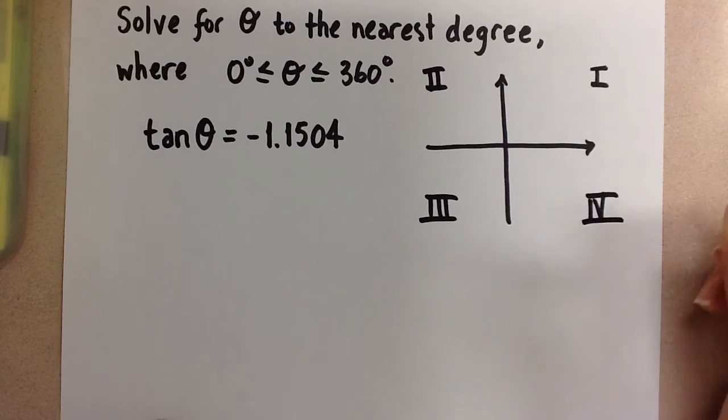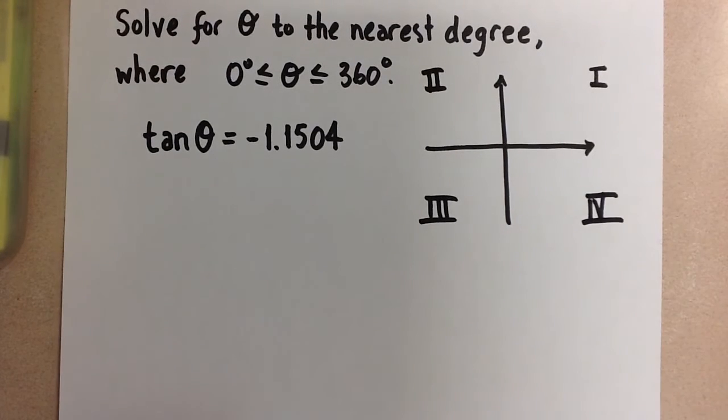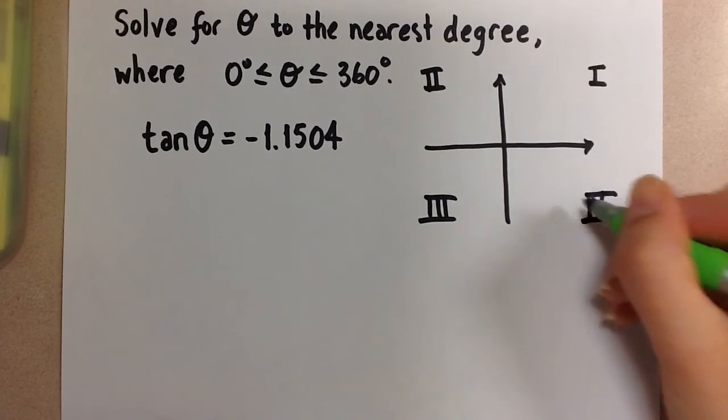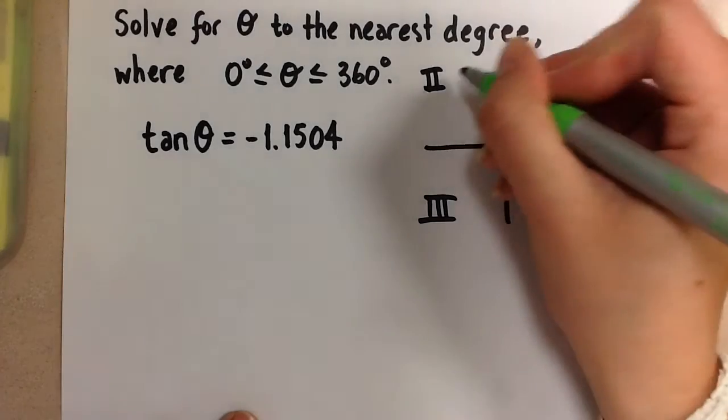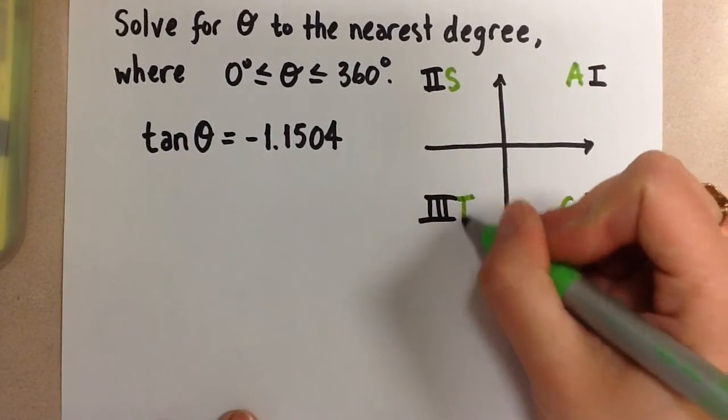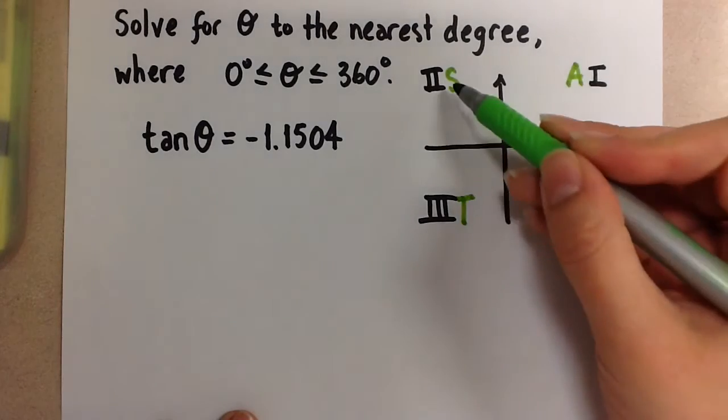And our CAST rule says that the trig ratios are positive in these quadrants. So there's our CAST acronym.